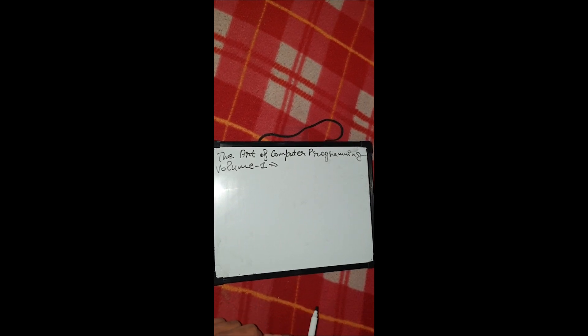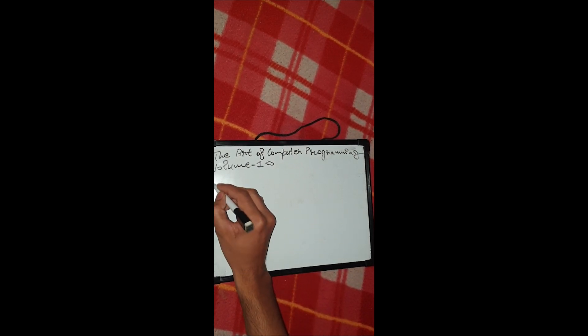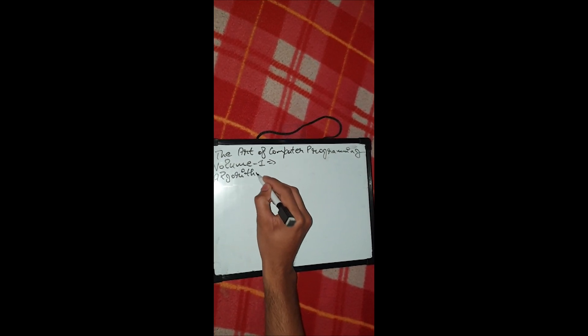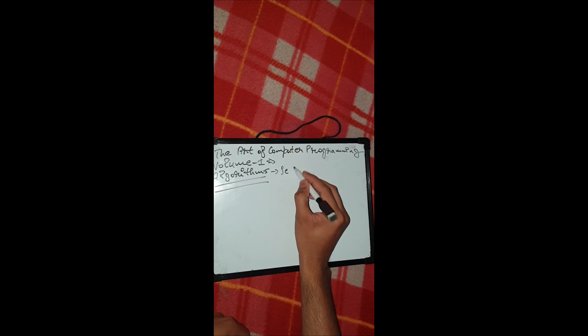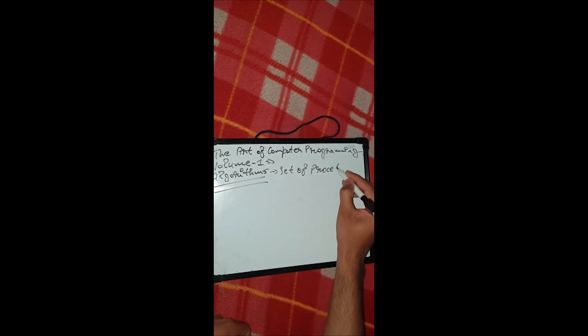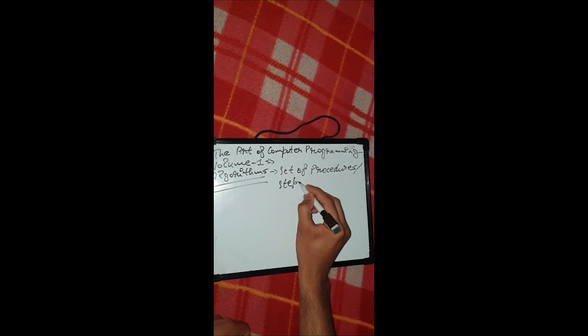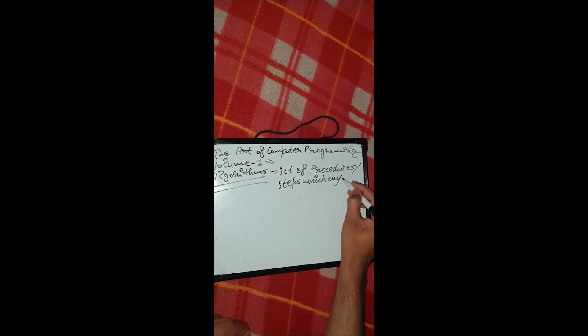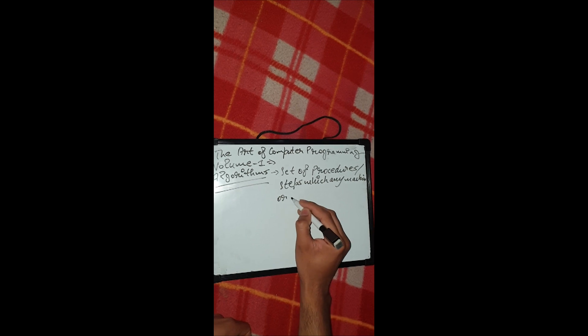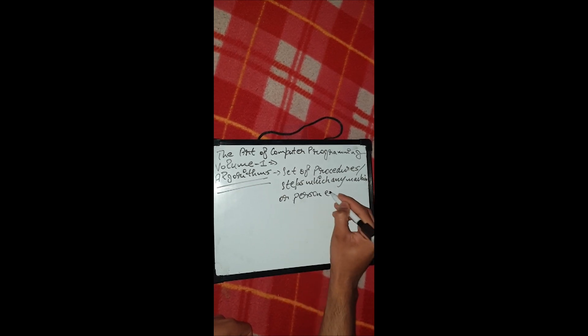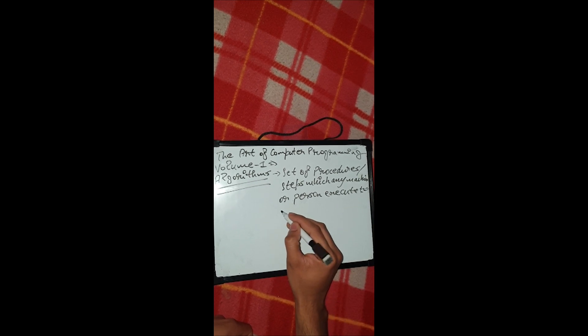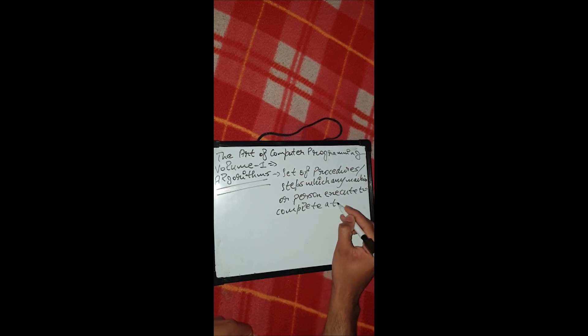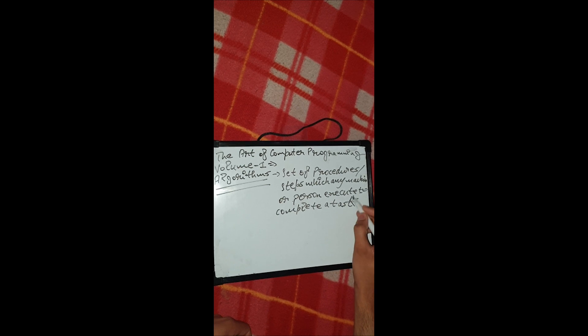Welcome guys. Today we will be discussing the first chapter of Art of Computer Programming, that's Volume 1. We're going to start right from section 1.1 which is about algorithms. Basically, an algorithm is a set of procedures or steps which any machine or person can execute to complete a task.